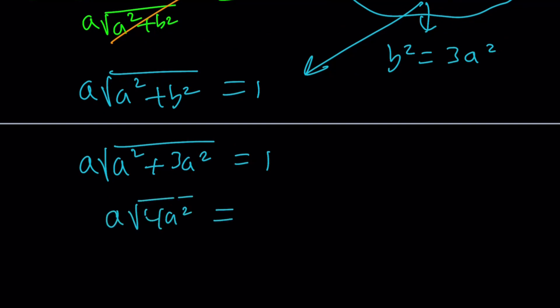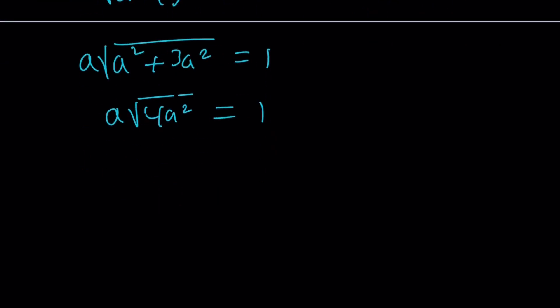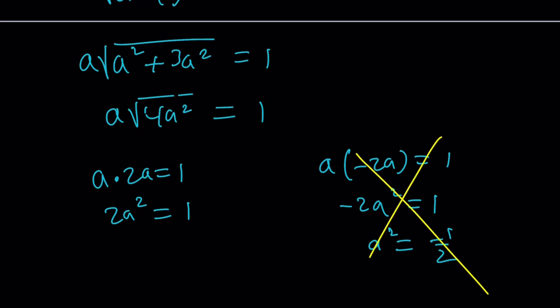Now, here we have to be very careful because the square root of 4 A squared can be two things, 2 A or negative 2 A, right? Well, here's the problem. If A is positive, we get A times 2 A equals 1. Otherwise, we get A times negative 2 A equals 1. The first one gives us 2 A squared equals 1. The second one gives us negative 2 A squared equals 1. Take a look at these. Can A squared be negative 1 half? Well, if A is real, no way. And we said that A and B must be real. So, this is not possible. So, we have to go with the first one.